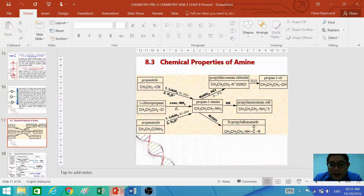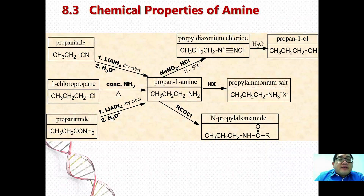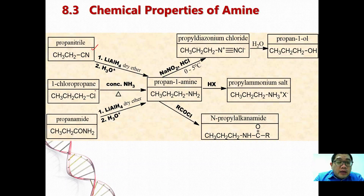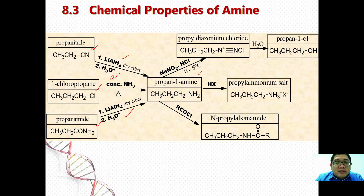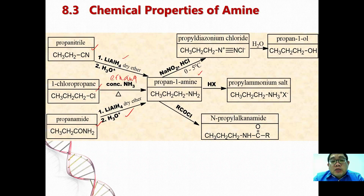We are going to continue with the second video for amines, where we are going to study the chemical properties of amine. As we learned previously, amine can be prepared by using three compounds: from nitrile (CN), from haloalkanes, and also by reduction of amide. When propanenitrile and propaneamide react with the reducing agent LiAlH4 followed by acidic hydrolysis, you are able to form an amine. If you react haloalkanes with concentrated ammonia in ethanol under reflux, you are also able to form amine.